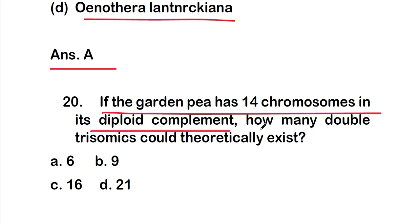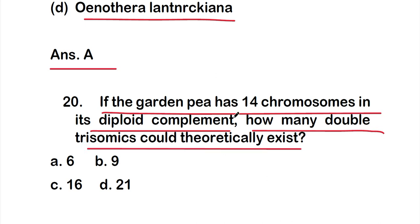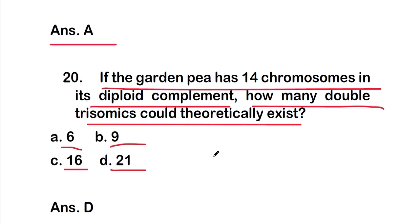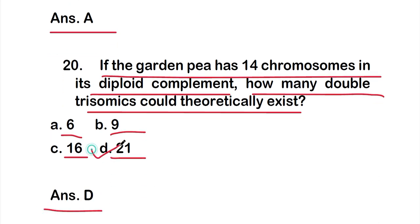Question twenty: if the garden pea has 14 chromosomes in its diploid complement, how many double trisomics could theoretically exist? The right answer is option D, that is 21. These are all 20 questions of part one of the MCQs on Mendelian genetics. Thank you for watching.